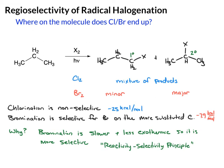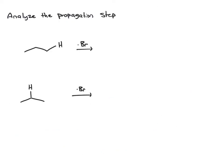We know that the bromination is more selective. But now let's think about why it's more selective for getting the halogen on the secondary carbon versus the primary carbon — basically, why is it more selective for the more substituted carbon? To do that, we want to analyze the mechanism, specifically the propagation step. Here we're comparing the propagation step for both hydrogens in this molecule. The first step in the propagation is a hydrogen atom abstraction, where the bromine radical will come and take a hydrogen atom and its electron, and the other electron will go into the carbon. So the product for this first one is the radical and HBr.